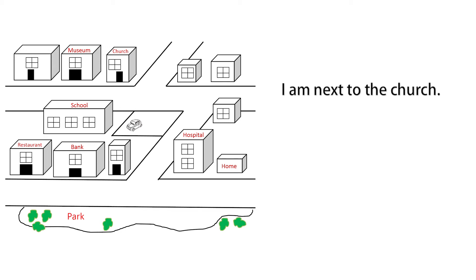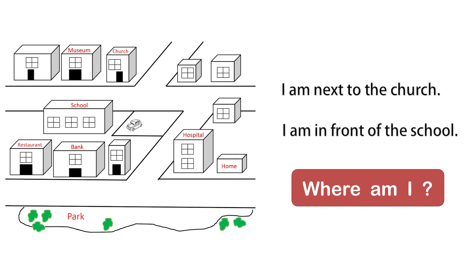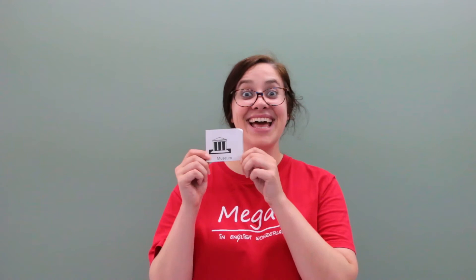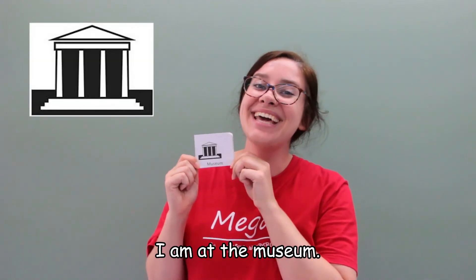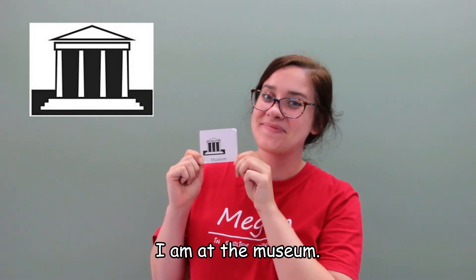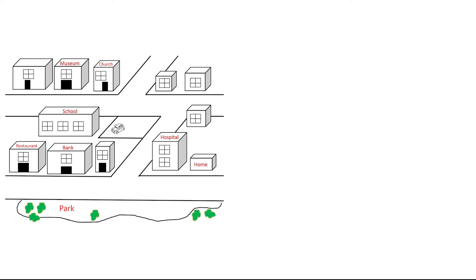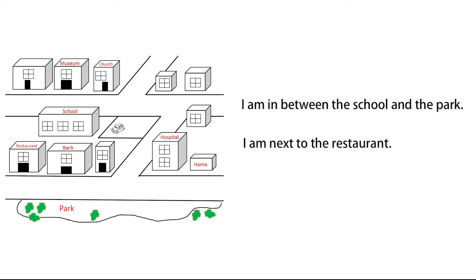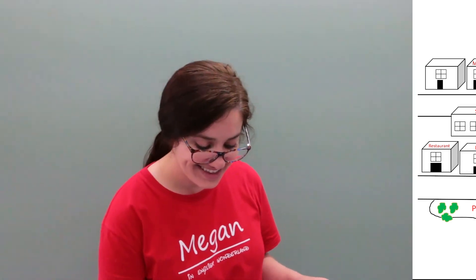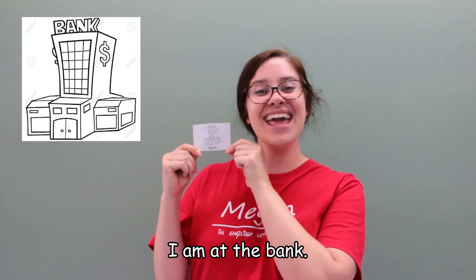I am next to the church. I am in front of the school. Where am I? Museum — I am at the museum. I am in between the school and the park. I am next to the restaurant. Where am I? Bank — I am at the bank.